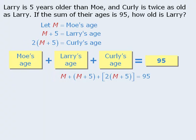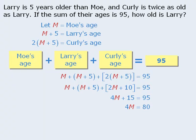We can now solve this equation by first expanding 2(m + 5) in the brackets, then simplifying the left-hand side, then subtracting 15 from both sides, and then dividing both sides by 4 to get m equals 20. Since m represents Moe's age, we know that Moe is 20 years old.